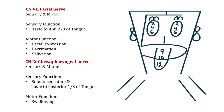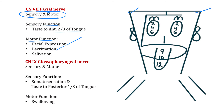Cranial nerve 7, the facial nerve, is a mixed type cranial nerve — both sensory and motor. Its sensory function gives the sense of taste to the anterior two-thirds of the tongue. Motor functions include facial expressions, lacrimation, and salivation.